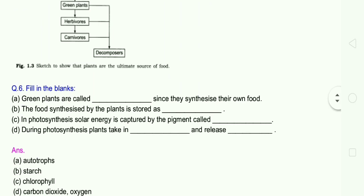Question number 6: Fill in the blanks. A, green plants are called autotrophs since they synthesize their own food. B, the food synthesized by the plants is stored as starch. Starch is stored in the plant.